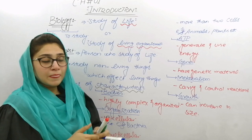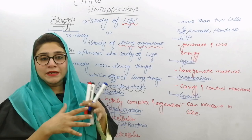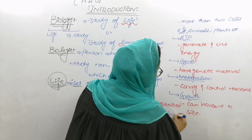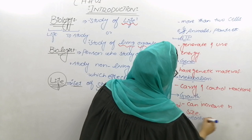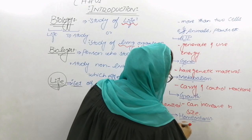इसके बाद next जो character आता है — That is Homeostasis. Homeostasis का मतलब होता है अपने अंदर के environment को maintain करके रखना — अंदर के माहول को maintain करके रखना। They can maintain their fairly constant internal environment — अपने अंदर के environment को maintain रख सकते हैं।